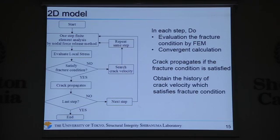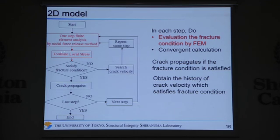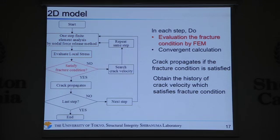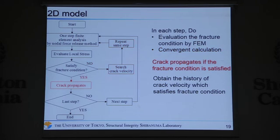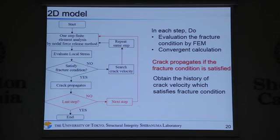This is the flowchart of the two-dimensional model. In each step, first we evaluate the fracture condition by FEM. If the fracture condition is not satisfied, we search for the crack velocity and repeat the same step. If it is satisfied, the crack propagates and we shift to the next step and repeat. Through this process, we can obtain the history of crack velocity that satisfies the fracture condition.